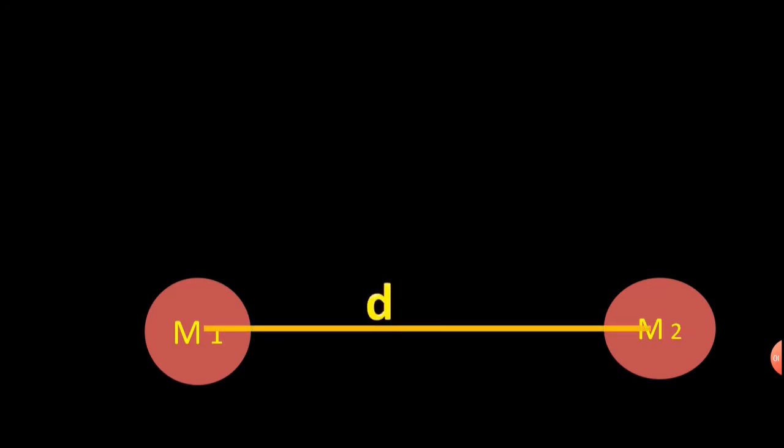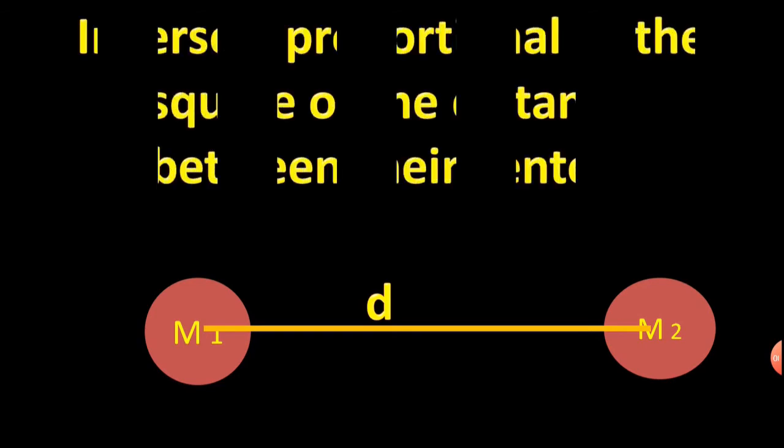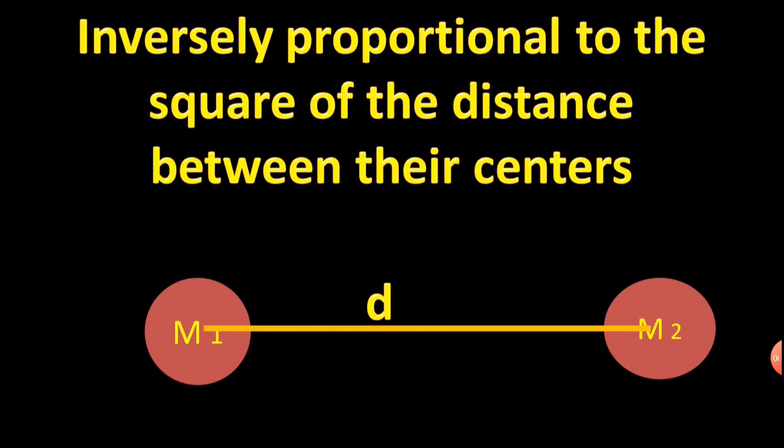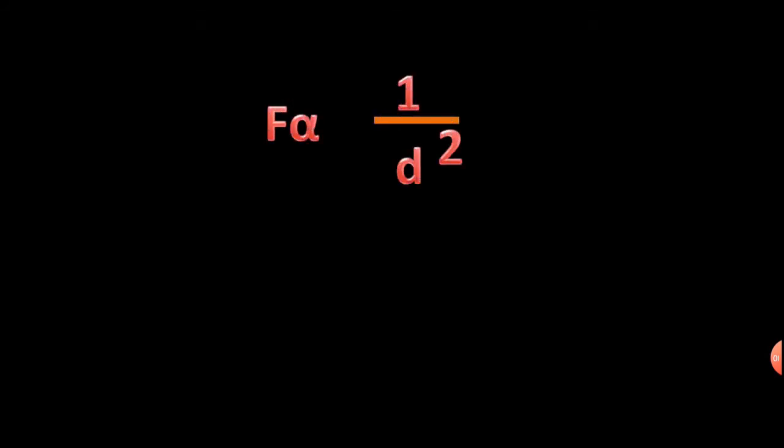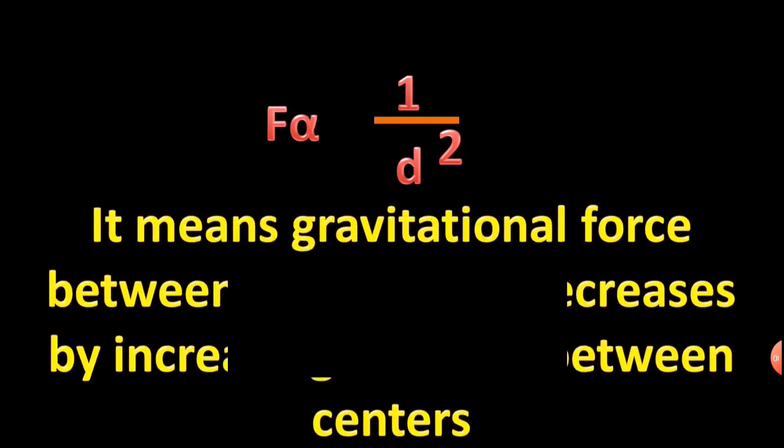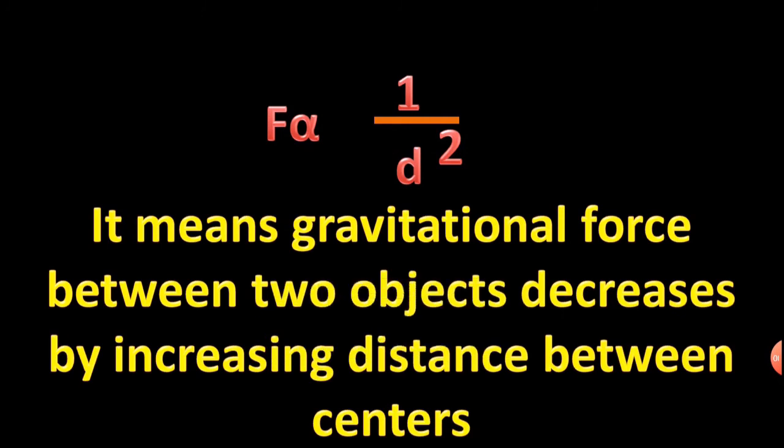If two objects are separated by distance D from their center, then gravitational force of attraction between them is inversely proportional to the square of the distance between their centers. That is, F is inversely proportional to 1 upon D square. It means gravitational force between two objects decreases by increasing distance between centers.